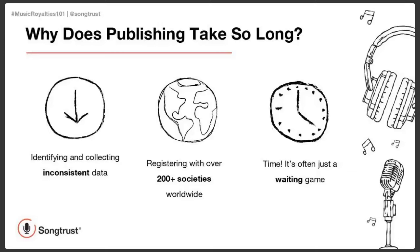How does SongTrust register a song? Once we receive your information as a songwriter and your songs in your account, we package all that data and send it to all the societies we're affiliated with. You only have to enter your song information once, and it gets accurately placed into all affiliated societies. Once we make those registrations, the waiting game begins with the societies — it's up to them to register the songs and release the money. Once that money is released, you'll see it in your SongTrust account.